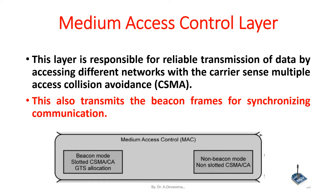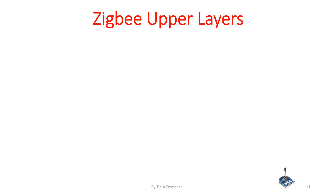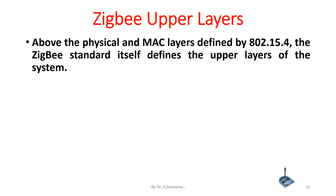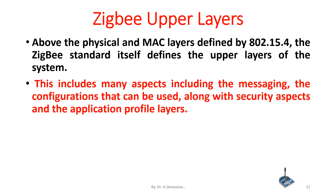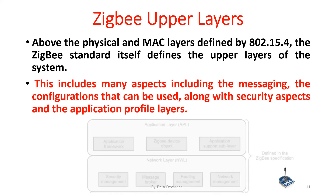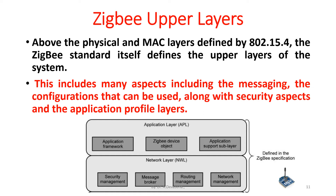ZigBee upper layers: above the physical and MAC layers defined by IEEE 802.15.4, the ZigBee standard itself defines the upper layers of the system. This includes many aspects including messaging, configurations, security aspects, and the application profile layers. Here is the representation of ZigBee upper layers.